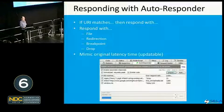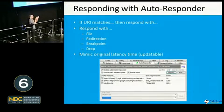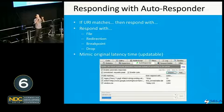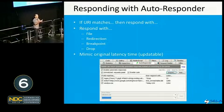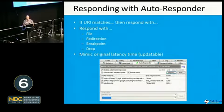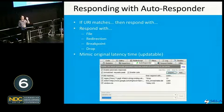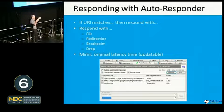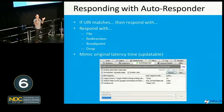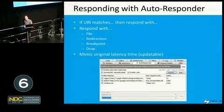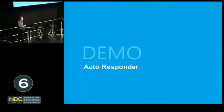The autoresponder means: when you see a URI that matches the following, respond with the following content. It can be a pre-saved file, a redirection to another website, or even a breakpoint — like conditional breakpoints in .NET. When you see a URI, do a breakpoint. I can even mimic the latency of the original request so people won't know I'm not actually connected to the internet.